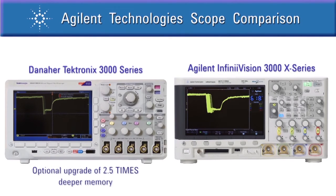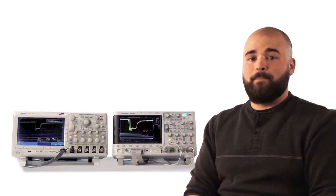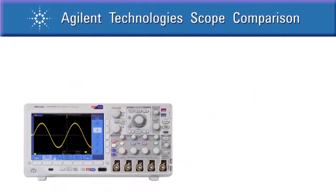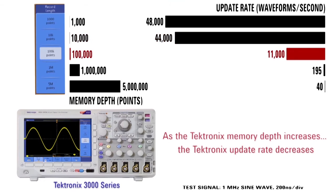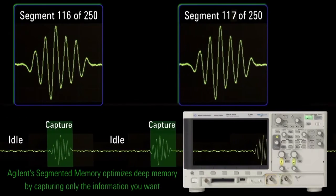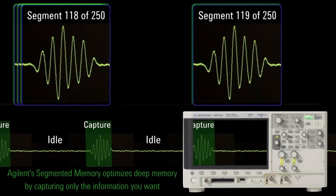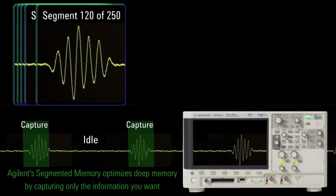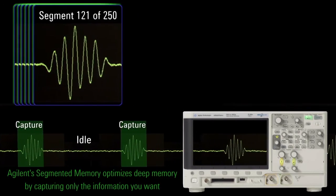The Tektronix 3000 can optionally have up to 2.5 times deeper memory than the 3000X series. But deeper memory is not always better. Tektronix defaults their memory depth to just 10,000 points and it must be adjusted manually by the user because of their trade-off between memory depth and update rate. InfiniVision scopes handle memory depth automatically to keep performance high. Additionally, Agilent uses smart memory technology to capture only the information you're looking for and ignore irrelevant data in between. We call this segmented memory, which is not offered in the Tektronix 3000 series.